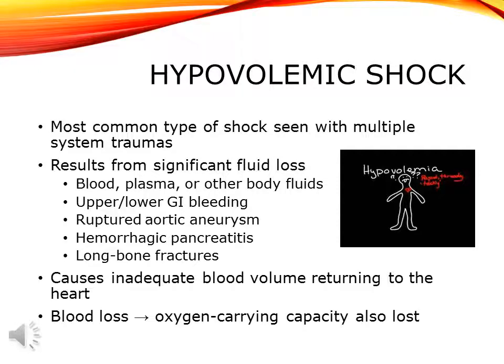Hypovolemic shock results from significant fluid loss that causes vascular blood volume to be less than normal. This fluid loss can be blood, plasma, or other body fluids. When we lose fluids through vomiting or diarrhea, it pulls fluids from our vascular system as well. Regardless of the type of fluid loss, the result is inadequate blood volume returning to the heart. If the shock is directly from blood loss, we're also losing oxygen-carrying capacity as hemoglobin levels drop.